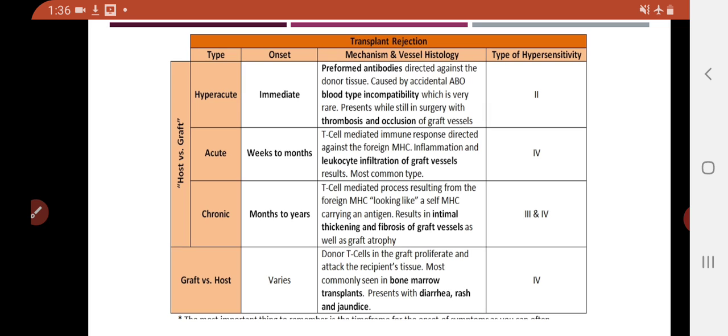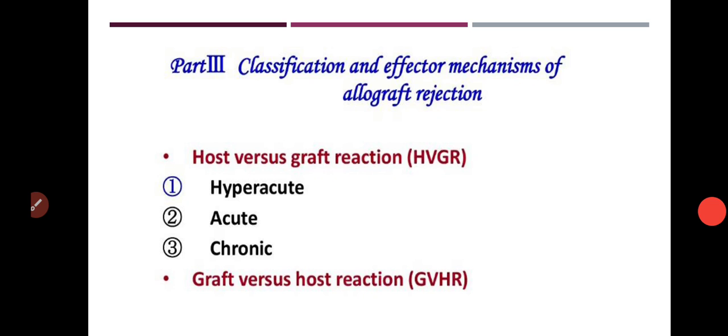The main thing to remember is which type of hypersensitivity causes which type of graft rejection. With this, we are ending the topic of allograft rejection. In the next lecture, we are going to study the last point of the syllabus — mechanisms of protection against rejection — meaning what precautions and medications doctors and surgeons give to patients to prevent rejection. Thank you.